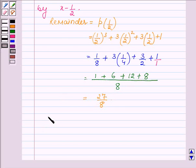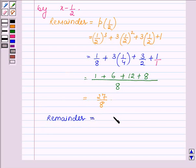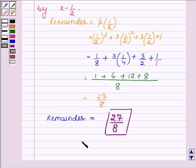Thus the remainder is equal to 27 upon 8, which completes the second part.